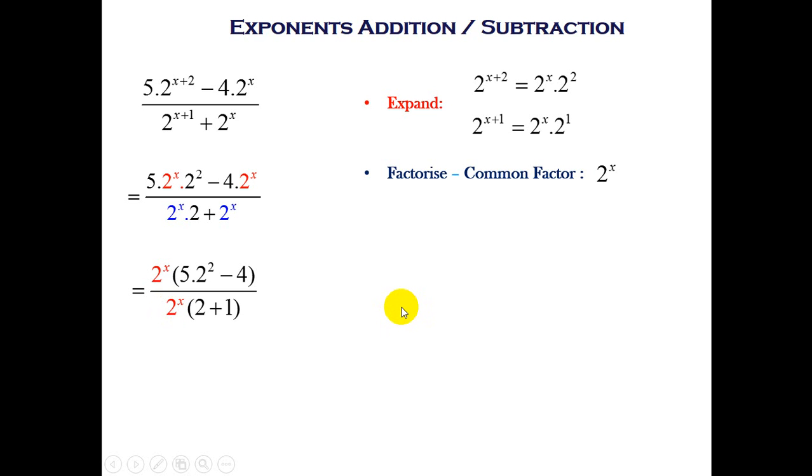What do you think we can do next? Divide. Some people will say cancel. You'll notice that 2 to the power x divided by 2 to the power x is 1. And now, we've got rid of the variable, and we can now deal with the brackets.